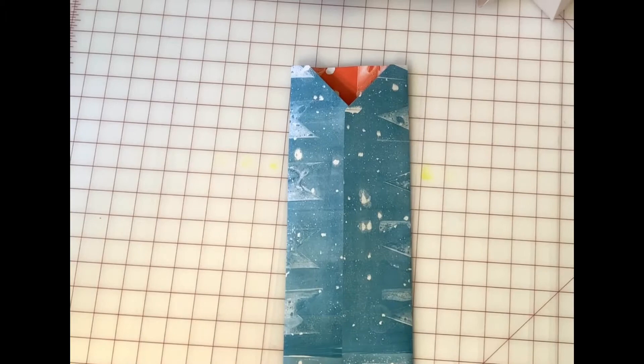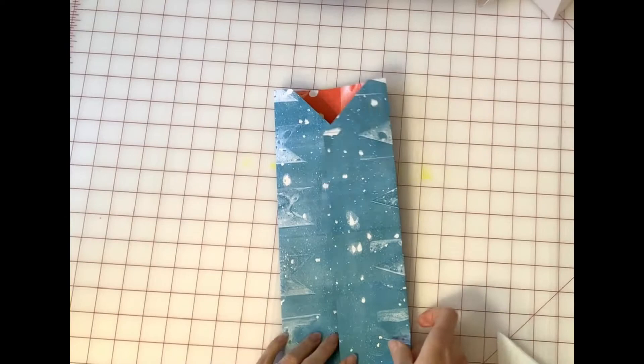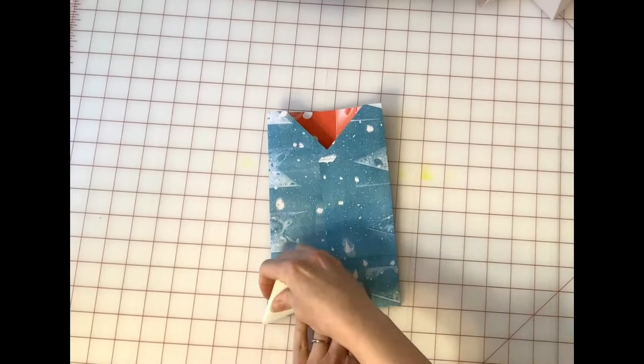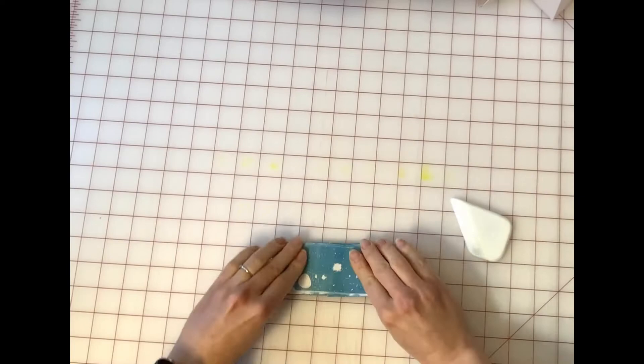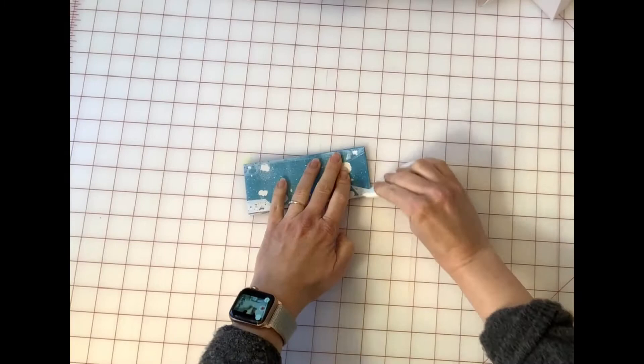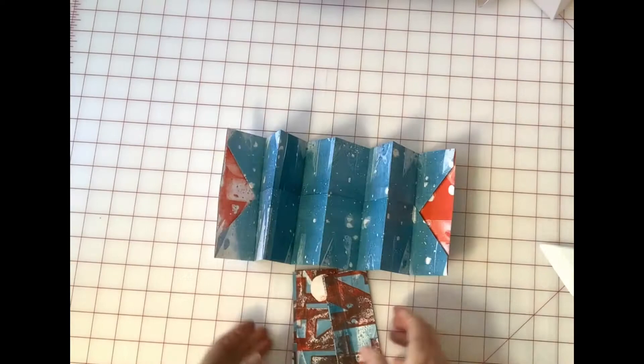At this stage you're just going to refold the accordion, creasing as you go. I recommend putting this piece under some weight while you get the inserts ready for the next part.